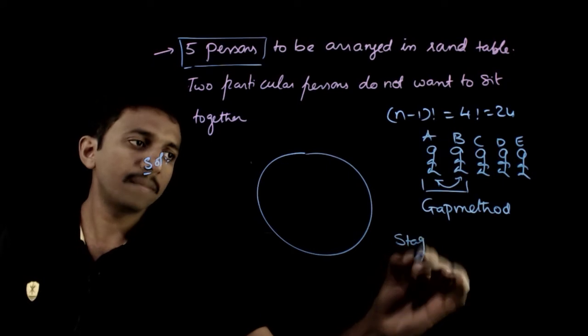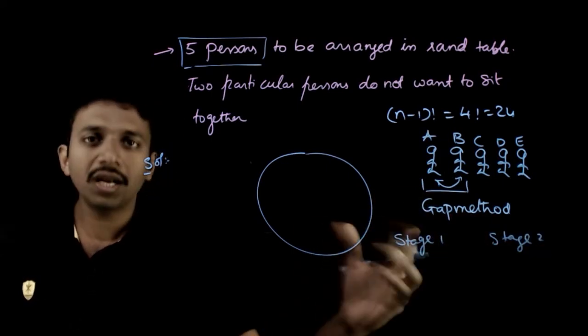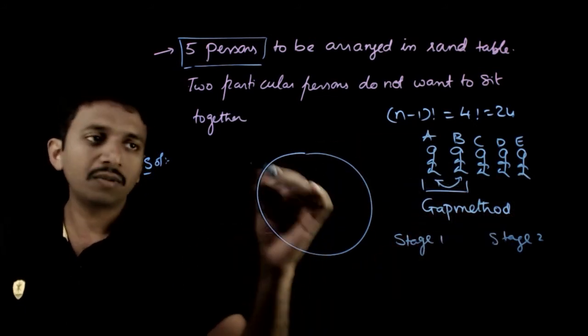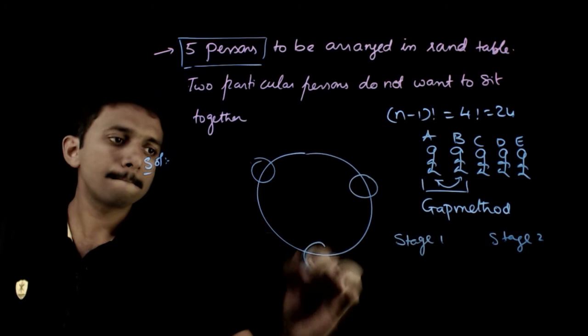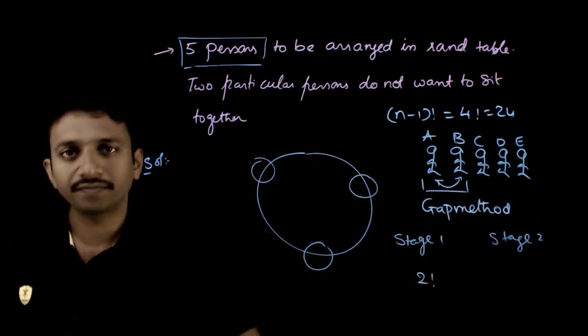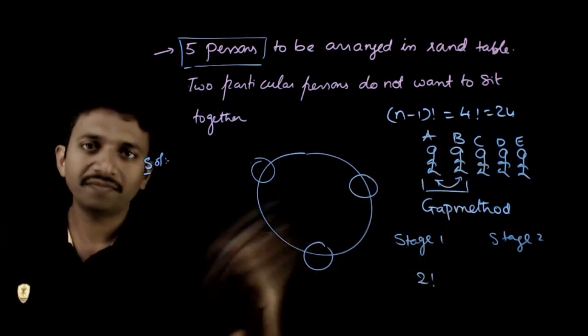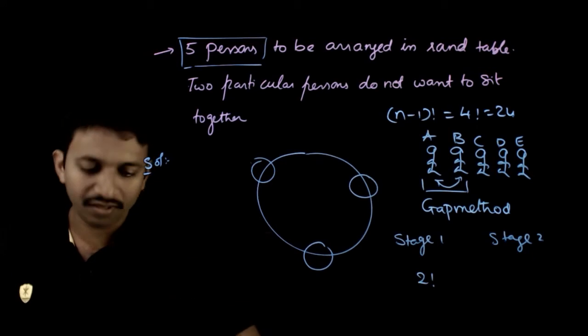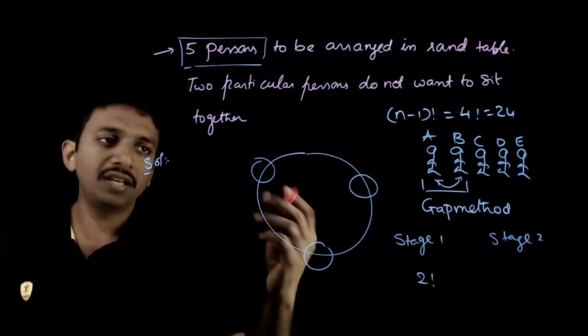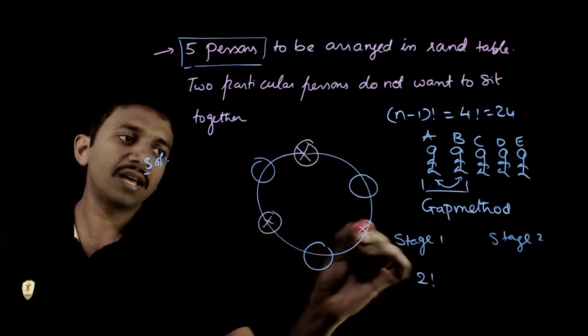So stage one and stage two. First, I will arrange these three persons on a round table. Three persons can be arranged in two factorial ways - you have two different ways to arrange C, D, E. Once you arrange C, D, E, you get gaps in between them. This is one gap, this is the second gap, this is the third gap.